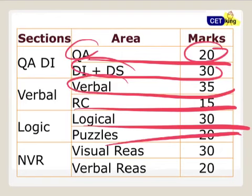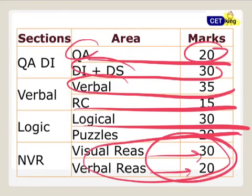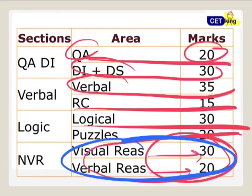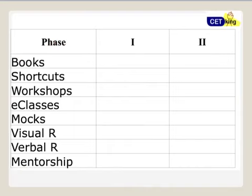Logical is 30, puzzles 20, visual reasoning 30, and verbal reasoning 20. These are the two areas which are ignored by everyone, where I want to work on, especially these two areas.